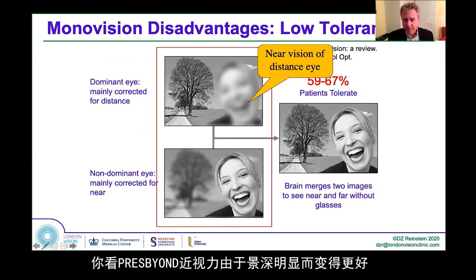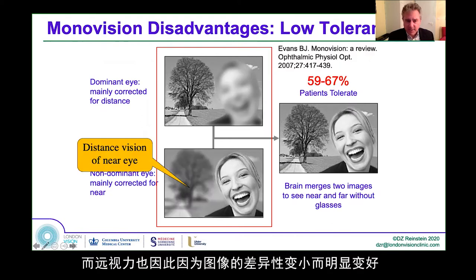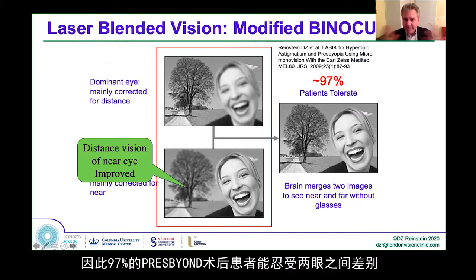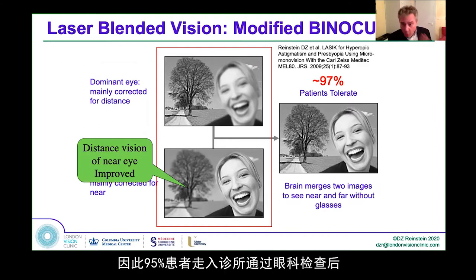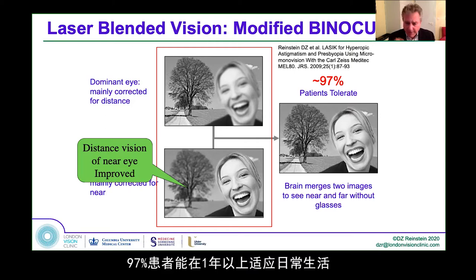The near vision of the distance eye is much better with Presbyond because of the depth of field, and the distance vision of the near eye is much better. Because the images are much less disparate, 97% of people are able to tolerate the difference between the eyes, as opposed to about 50–60% with monovision. More than 95% of the people that walk through the door in the clinic pass the tests for being candidates for Presbyond. For plano presbyopes, 97% of patients are adapted by one year.